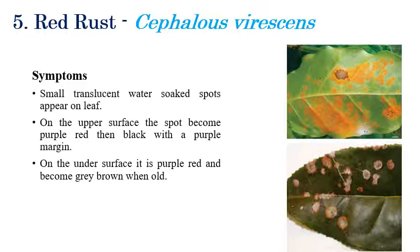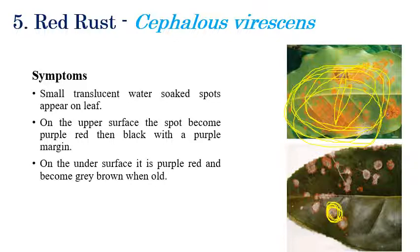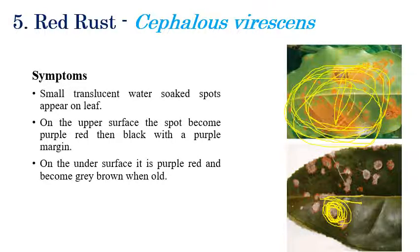Red rust is an algal disease caused by Cephaleuros virescens. Initially on the lower surface, small water-soaked brown or orange color spots appear. On the upper surface, black or purple color spots can be seen on the midrib regions and margins. Over time, the purple-red color spots on the lower surface convert into brown in color.